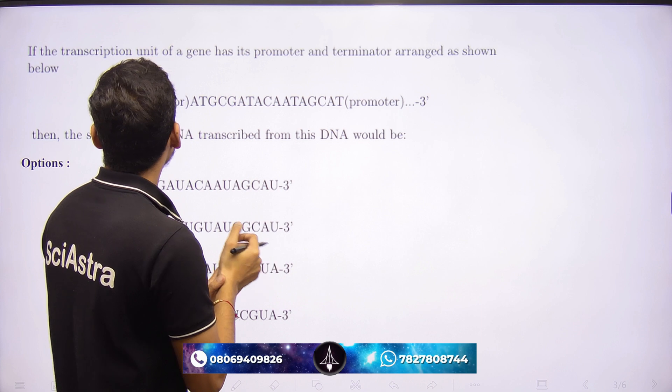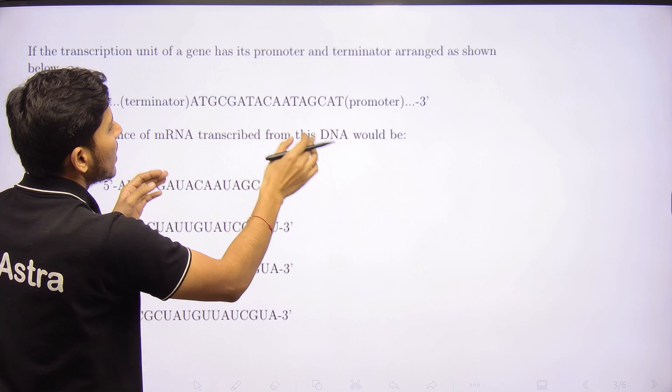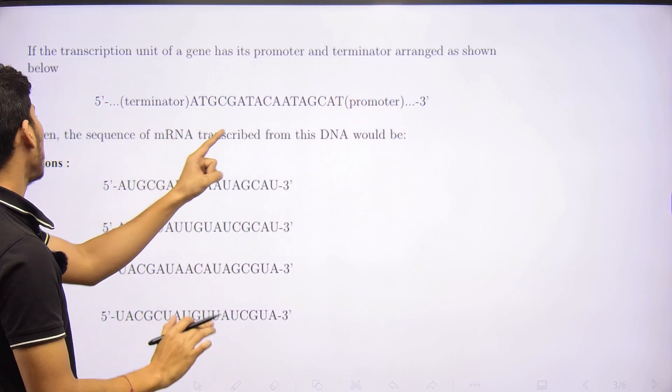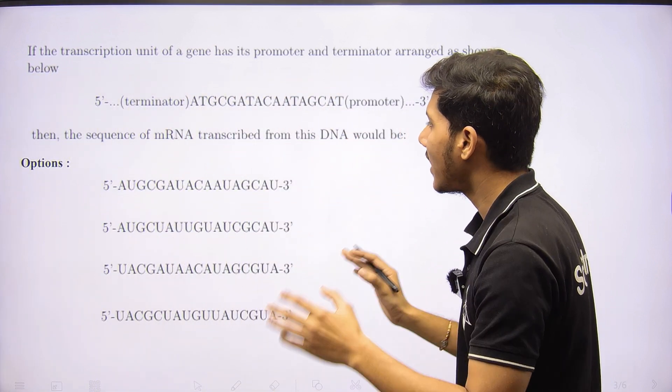Let's see this question. They are saying that if the transcription unit of a gene has its promoter and terminator arranged as shown, then what would be the sequence of mRNA transcribed from this DNA? So if this is a gene or cistron and the template strand, then what will be the sequence of the mRNA?